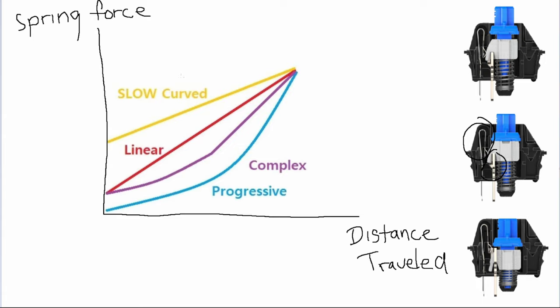Say for example we take a look at a 65 gram spring. Usually aftermarket springs are rated for bottom out force. So a 65 gram spring means that the switch will bottom out at 65 grams. Let's set our endpoint of our spring force curve to 65 grams.